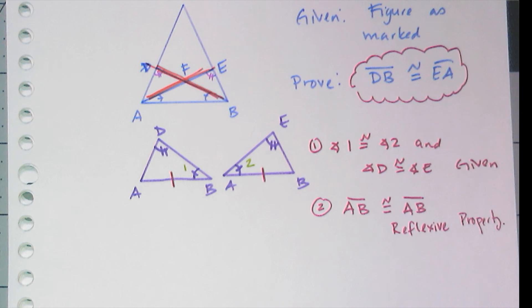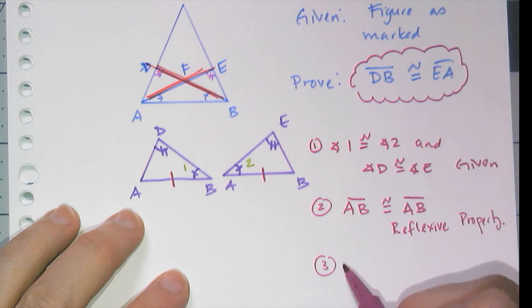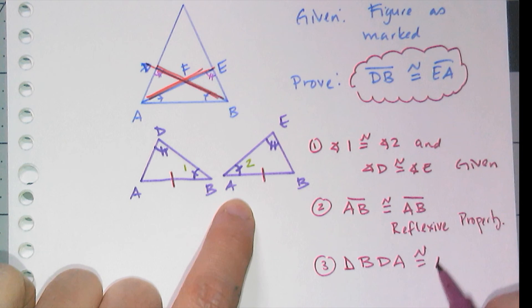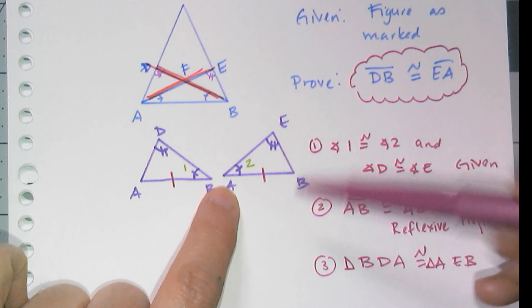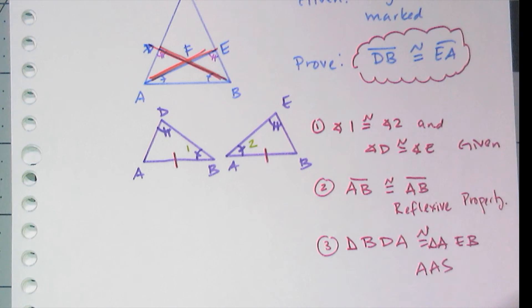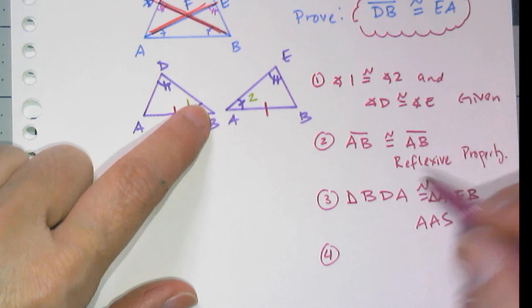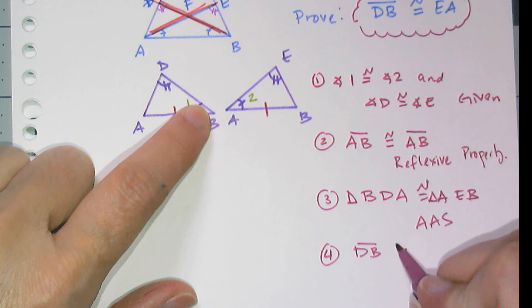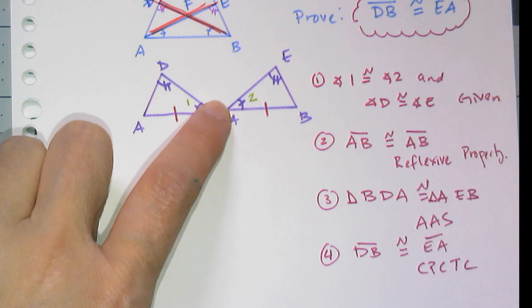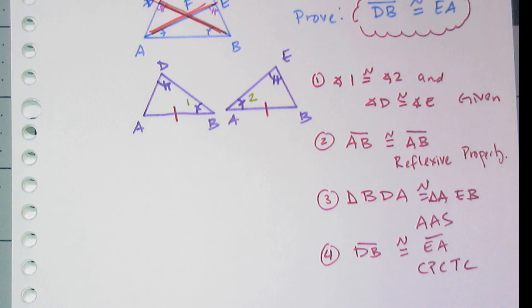Okay, now then I can say ha ha, triangle BDA is congruent to triangle AEB—B-D-A, A-E-B—okay, and I can say that's true by angle-angle-side or side-angle-angle. And then, oh hey, I have DB is congruent to EA by CPCTC, corresponding parts of congruent triangles are congruent, so yay I'm done.